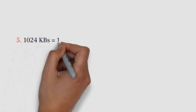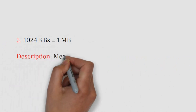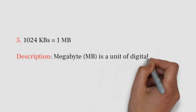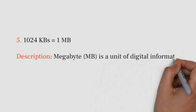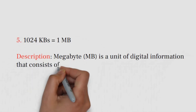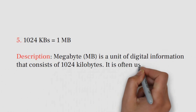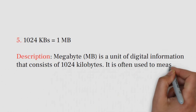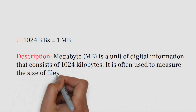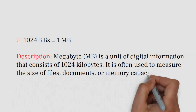Number 5: 1024 KBs equals 1 megabyte. Megabyte (MB) is a unit of digital information that consists of 1024 KB. It is often used to measure the size of files, documents, or memory capacity.